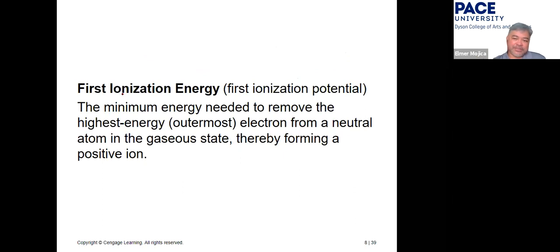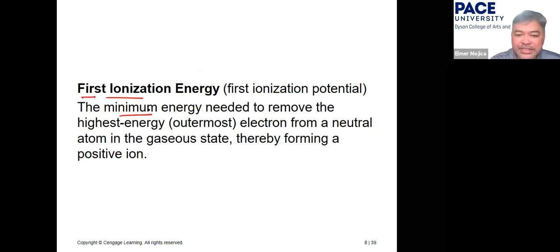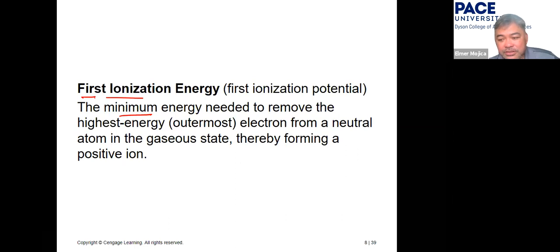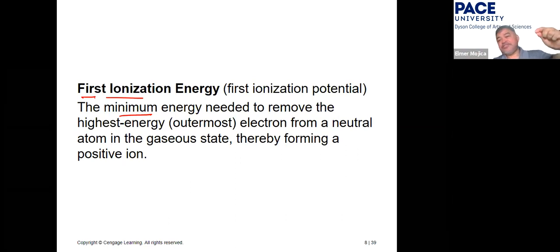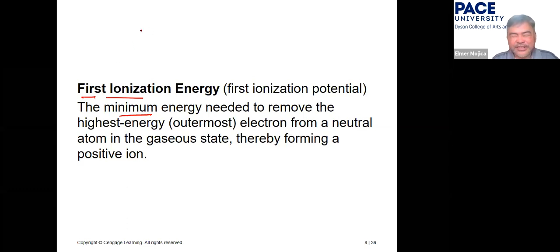The next property is first ionization energy: the minimum energy needed to remove the highest-energy (outermost) electron from a neutral gaseous atom, forming a positive ion. First ionization energy removes the first electron; second ionization energy removes the second, and so on.